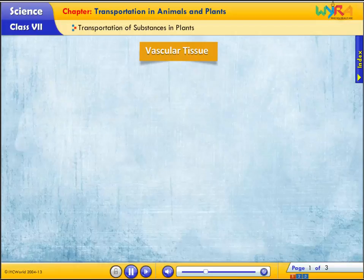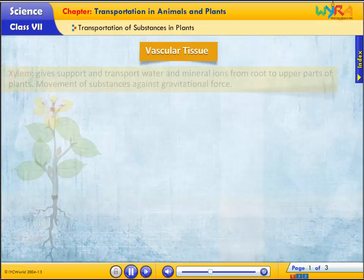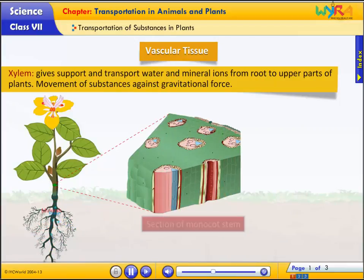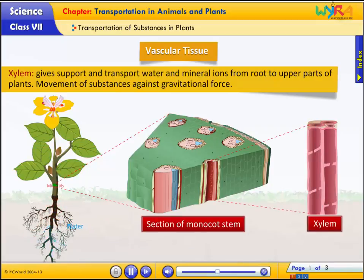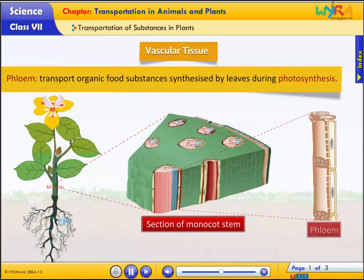Let's understand the vascular tissue. Xylem and phloem form vascular tissue. Xylem gives support and transports water and mineral ions from the root to upper parts of plants — movement of substances against gravitational force. Phloem transports organic food substances synthesized by leaves during photosynthesis.